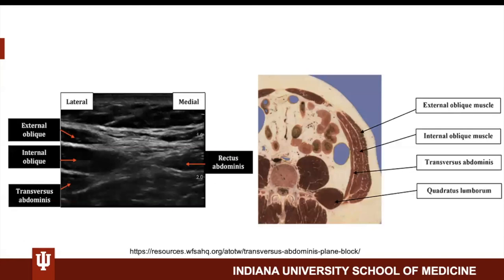Here we see the three muscle layers including the external oblique, the internal oblique, and transversus abdominis. Here you also see the rectus abdominis, and I want to note that the lateral cutaneous nerves run along this region.